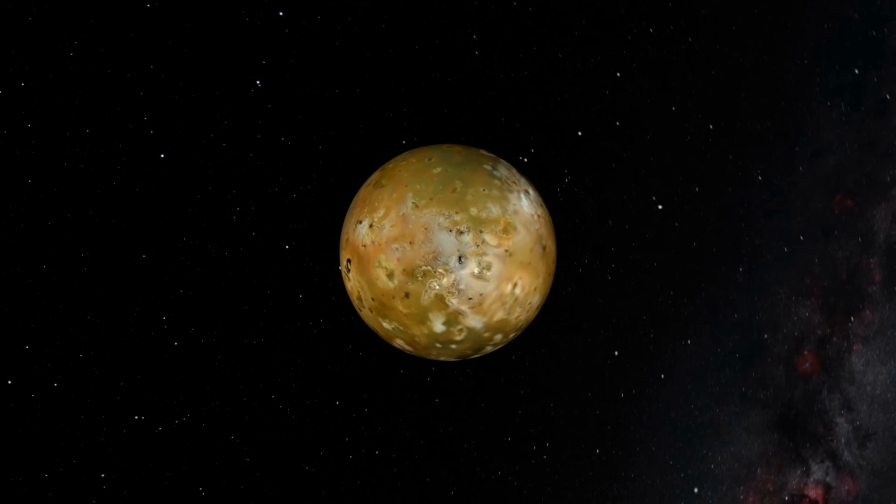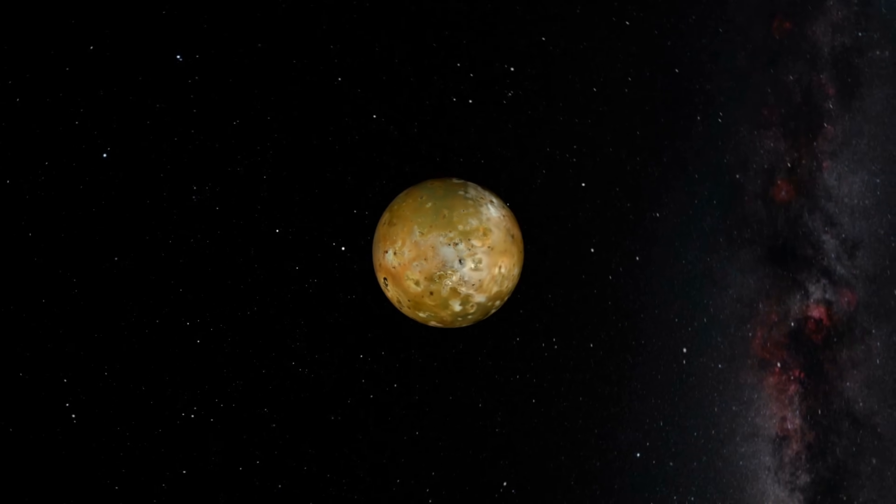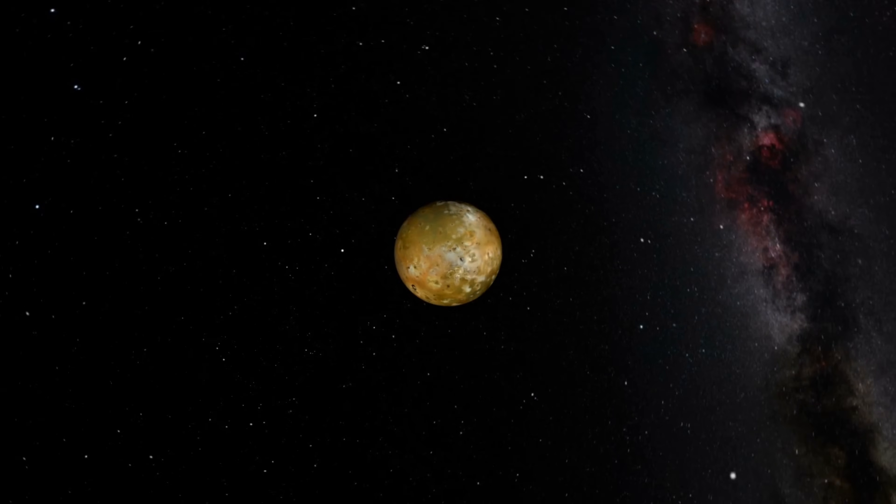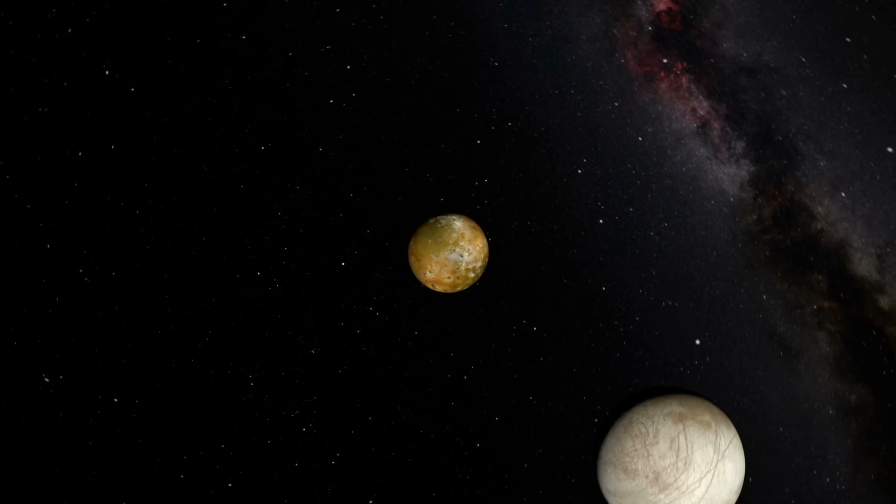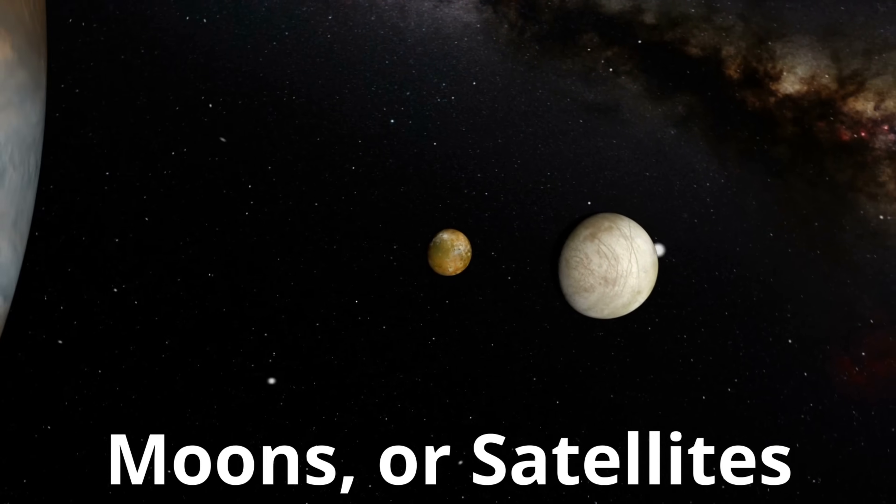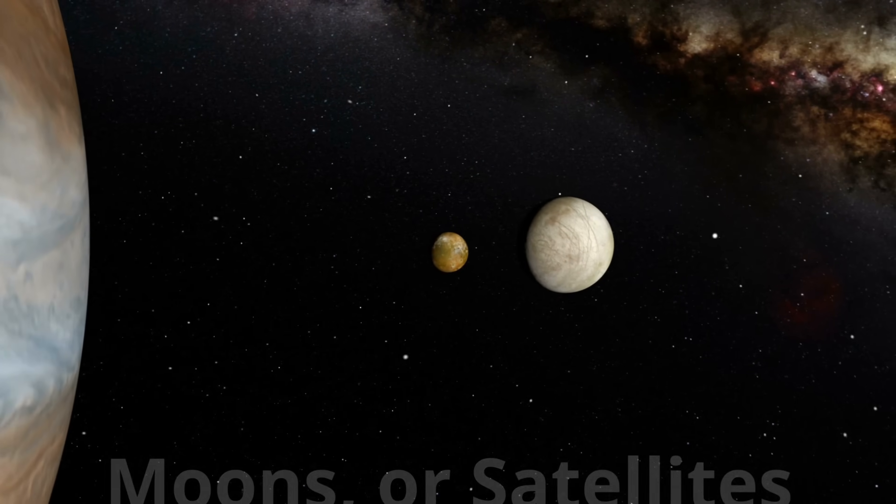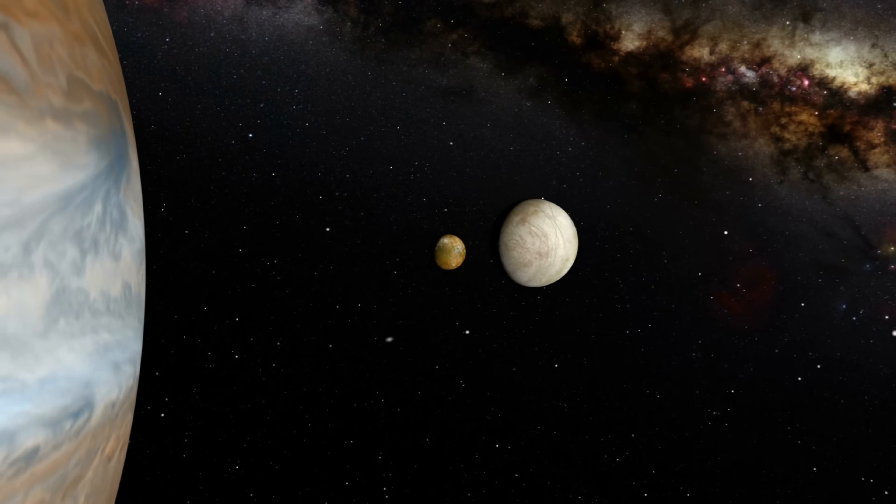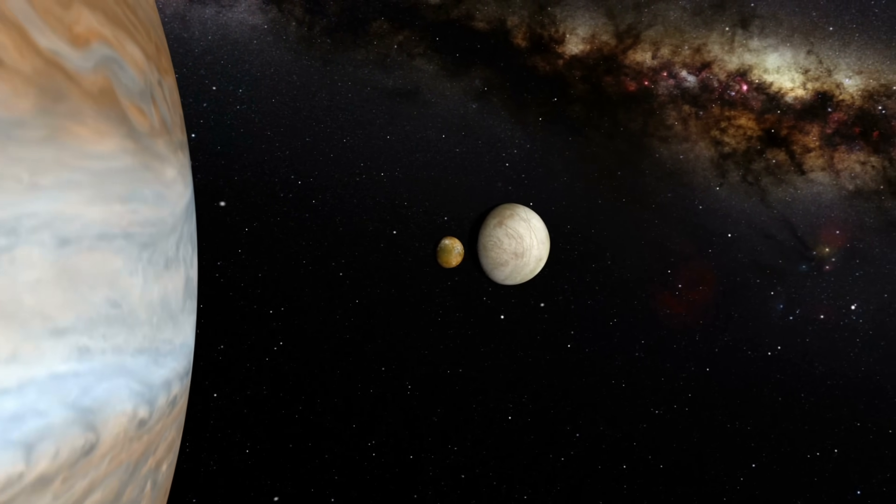Most of the eight planets have moons, as I've said. Mercury and Venus are the only two planets in our solar system that do not have any moons. Moons are satellites or small objects that orbit around a larger planet. Earth's one moon is considered to be a satellite because it orbits around Earth.